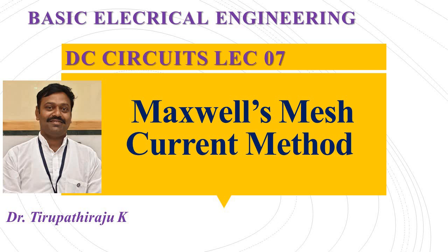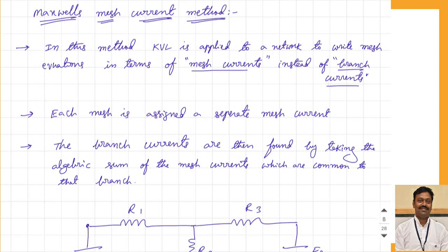Good morning all. Today we are going to discuss about Maxwell's mesh current method. In this method, KVL is applied to a network to write the mesh equations in terms of the mesh currents instead of branch currents.